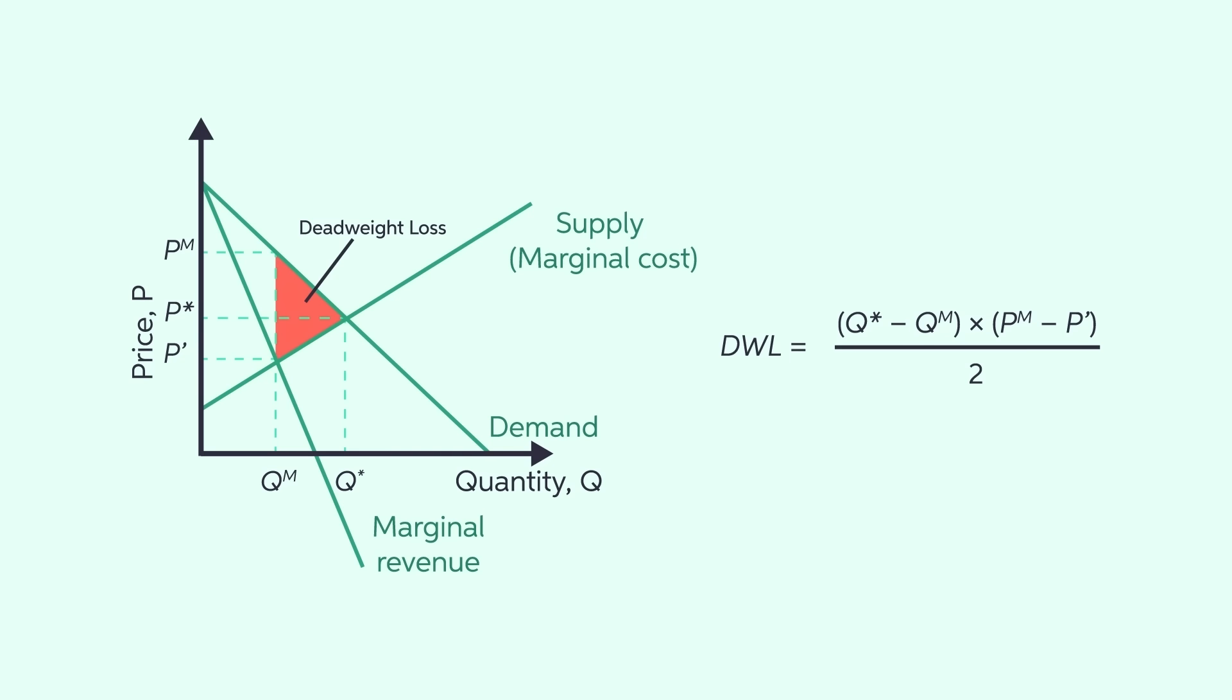Being able to compute the deadweight loss is very important. A regulator might need to compare the loss in social welfare caused by a monopoly to the cost of a regulator intervening. Obviously, a regulator intervenes in order to assess if it is necessary to limit the monopolist's market power. This should help you understand and quantify the cost that society pays when monopolies dominate a given market.